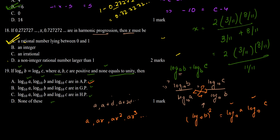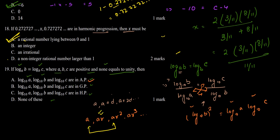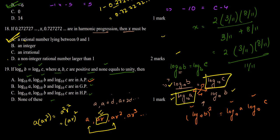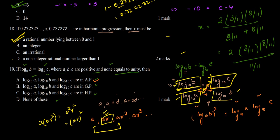This is exactly the property of a geometric progression: in a GP with terms a, ar, ar², the product of the first and third terms a times ar² equals a²r², which is the square of the middle term ar. Therefore log₁₀a, log₁₀b, and log₁₀c are in GP. The correct answer to question 19 is option B. This ends the video — you will find more solutions to ACET September 2019 in our further videos.